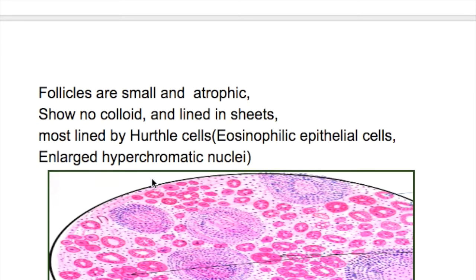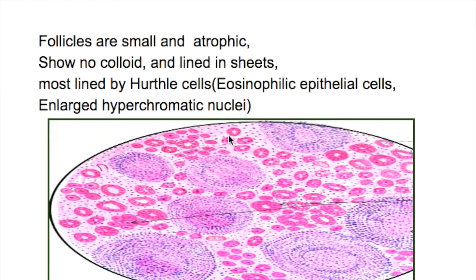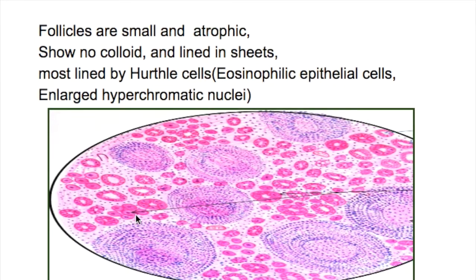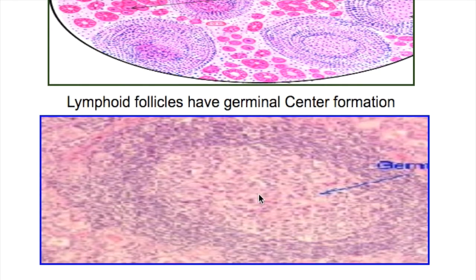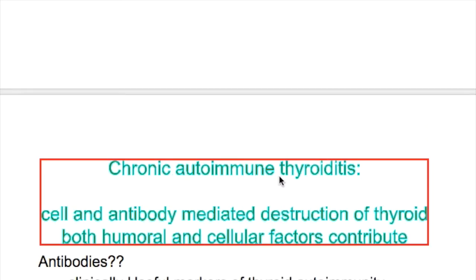In Hashimoto's thyroiditis, follicles are small and atrophic and lined in sheets. Most are lined by Hurthle cells. What is a Hurthle cell? It is an eosinophilic epithelial cell with enlarged hyperchromatic nuclei. Lymphoid follicles are present and they have germinal centers in them.